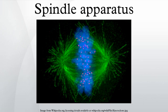Bipolar attachment aligns chromosomes at the cell equator and poises them for segregation to daughter cells. Once every chromosome is bi-oriented, anaphase commences and cohesin, which couples sister chromatids, is severed, permitting the transit of the sister chromatids to opposite poles.